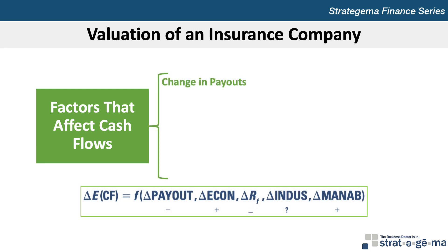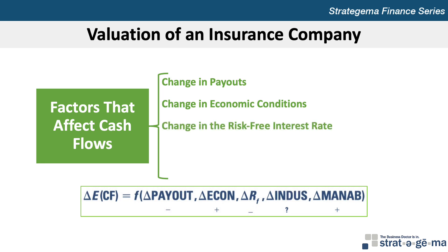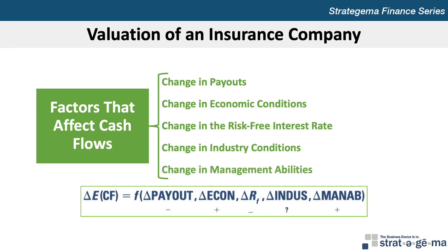The payouts on insurance claims are somewhat stable for most life insurance policy companies with a diversified set of customers. In contrast, the payouts on property and casualty claims can be volatile for PC companies. Economic growth can enhance an insurance company's cash flows because it increases the level of income of firms and households and can create the demand for the company's services. Some of an insurance company's assets, such as bonds, are adversely affected by rising interest rates. Thus, the valuation of an insurance company may be inversely related to interest rate movements. Insurance companies are subject to industry conditions including regulatory constraints, technology, and competition within the industry. An insurance company has control over its organizational structure and composition of its managers, who are tasked with making internal decisions that will capitalize on the external forces outside of their control. Thus, the management skills of an insurance company can influence its expected cash flows. In particular, skillful management is needed to determine the likelihood of events that could cause massive payouts to policyholders.